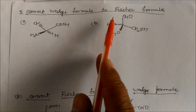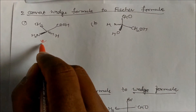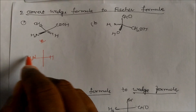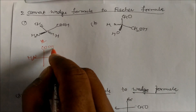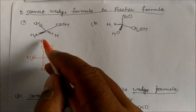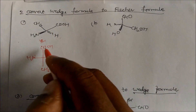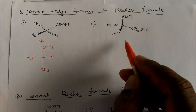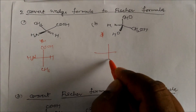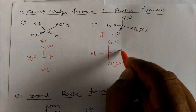Convert wedge-dash formula to Fischer formula. Looking at the structure with your eyes from the designated side, you can see the ammonia/NH2 group, hydrogen, COOH, and CH3. Viewing from one side: NH2 comes to the left and hydrogen goes to the right. For the next structure — observing from a side — you get CHO at top, CH2OH at bottom, hydrogen on the left, and OH on the right. This is left and this is the right hand side.